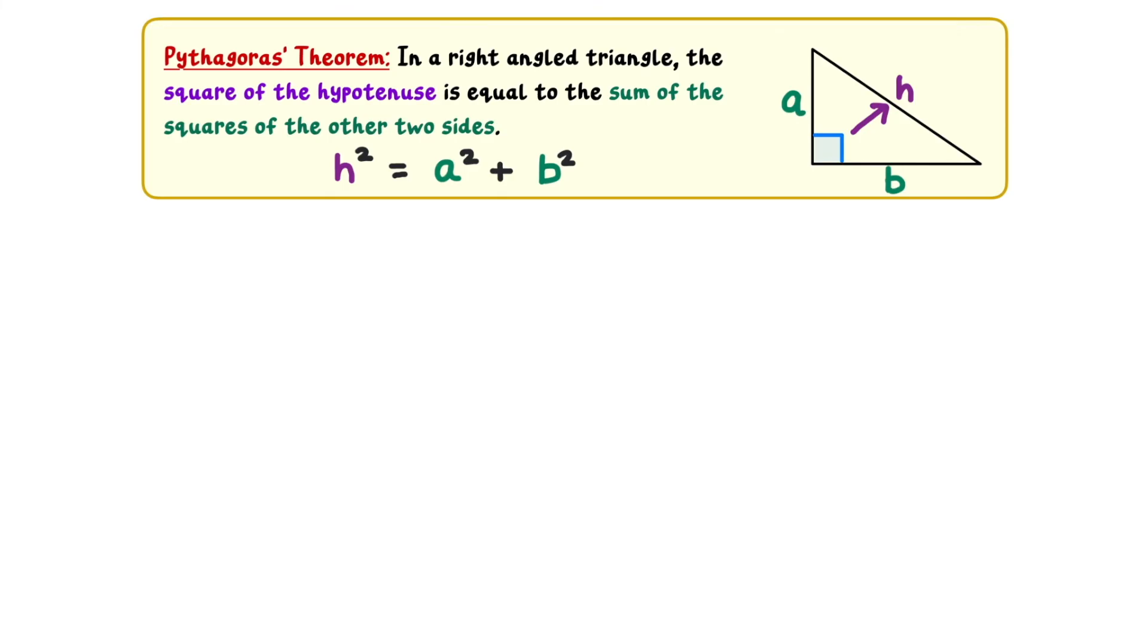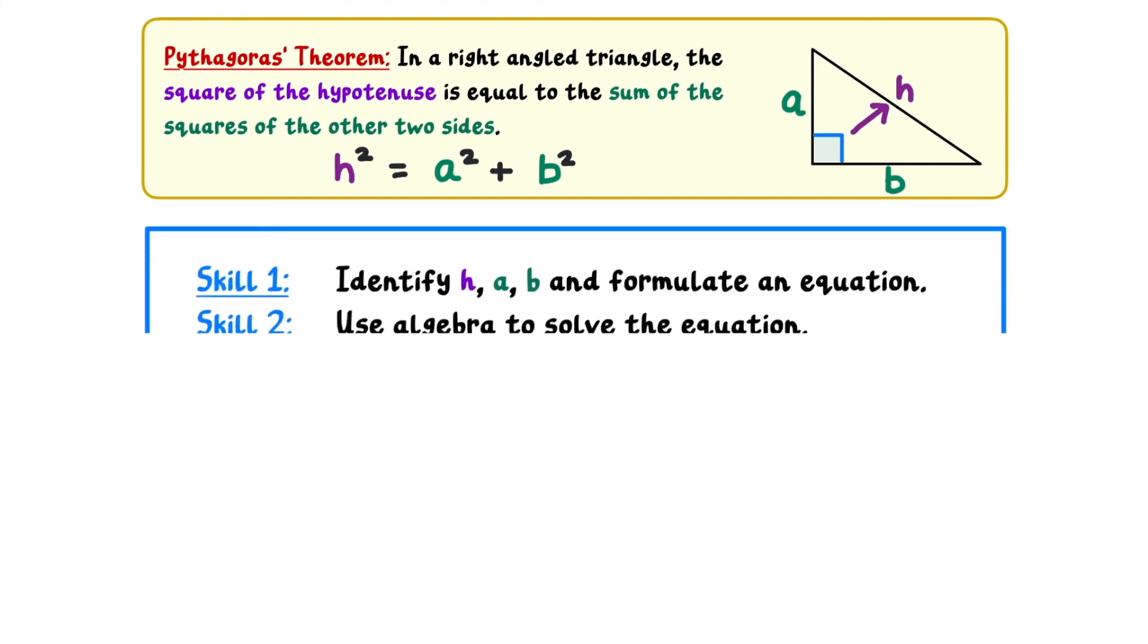To summarise, there's two key skills required to apply Pythagoras' theorem. Skill 1 is to look at the triangle, correctly identify the values of h, a, and b, and then use these values to create a mathematical equation. Skill 2 is to use your knowledge of algebra to solve the resulting equation.